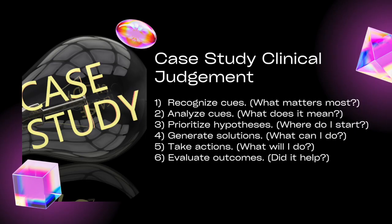One of the new NGN items that I think are very applicable and a great addition are case study-style questions. You're going to get three case studies total, with six items of those item types within each case study. The case study focuses on these six things: one, recognizing the cues — what matters most; two, analyzing those cues — what does that mean, what is it trying to tell us; three, prioritize and hypothesize — where do I start, what's the most important thing; four, generate solutions — what can I do within my scope of practice to make it better; five, take actions — what will I do and why; and six, evaluate the outcomes — what were the results of the actions that we took?